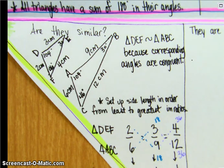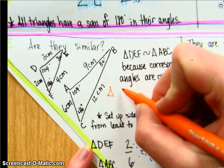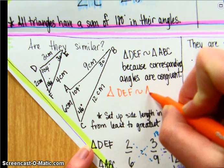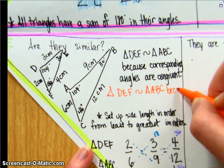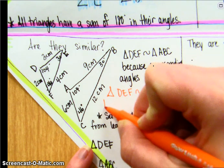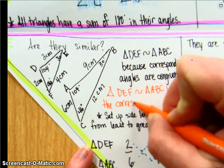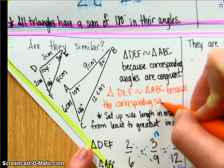And then in our statement, we could say triangle DEF is similar to triangle ABC because the side lengths corresponding sides are proportional.